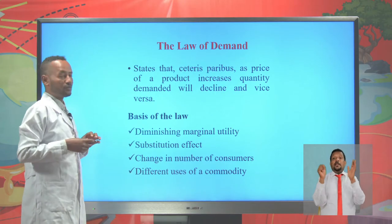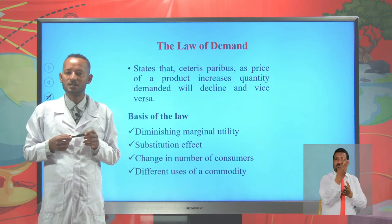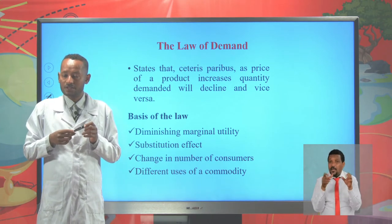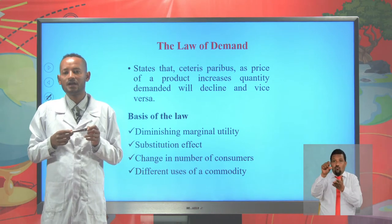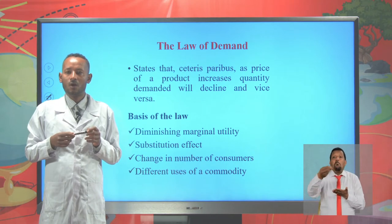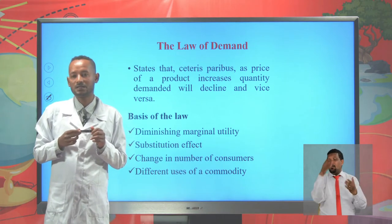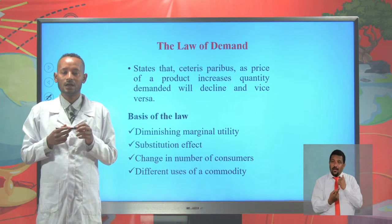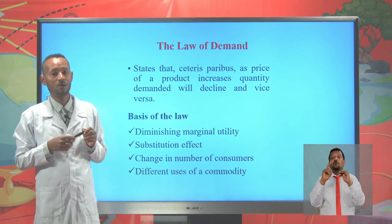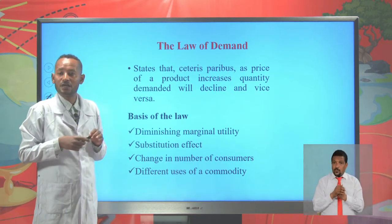For example, if you have 10 birr and the price of an egg is 2 birr, spending all 10 birr you can buy 5 eggs. But if the price of egg increases from 2 birr to 5 birr, then you will buy only 2 eggs. So, with other things remaining unchanged — especially if income remains unchanged — an increase in price from 2 to 5 causes quantity demanded to decline from 5 to 2.